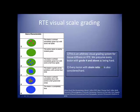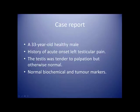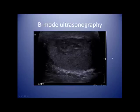We consider every lesion with grade 4 and above as being hard, and also look at every lesion with a strain ratio of more than 2 as being considered hard. Case report: a 33-year-old healthy male with a history of acute onset left testicular pain. The testis was tender on palpation but otherwise normal, with normal biochemical and tumour markers.